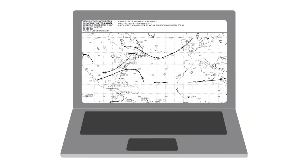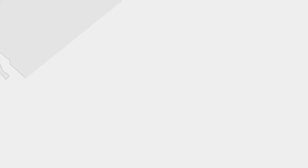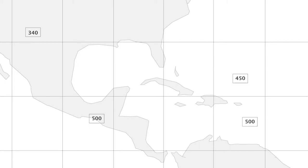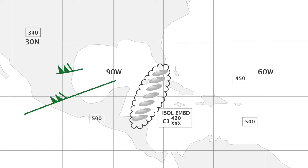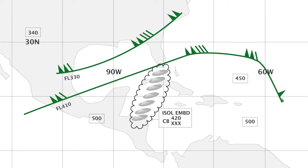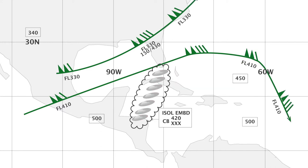Pilots can also detect hazard conditions by observing the TAT — total air temperature measurement — that shifts to zero. The analysis of weather charts allows pilots to spot possible areas of ice crystals. A deep convective zone combined with a prevailing wind at the top of the convection strongly suggests the presence of ice crystals in the downwind zone of these convective cells.